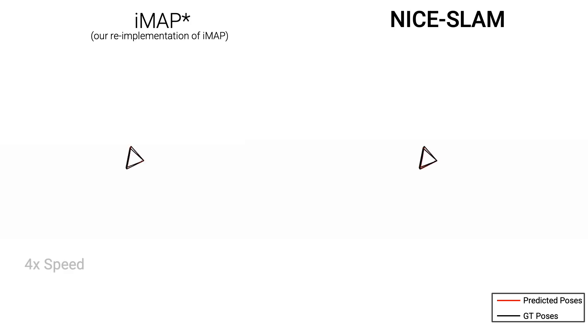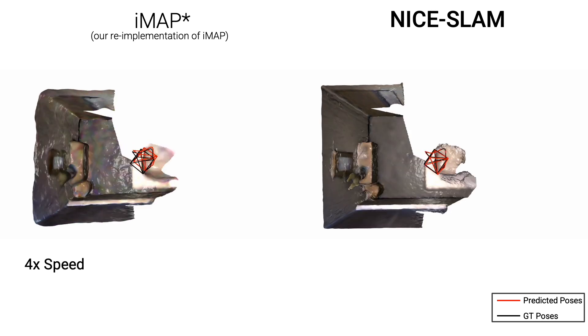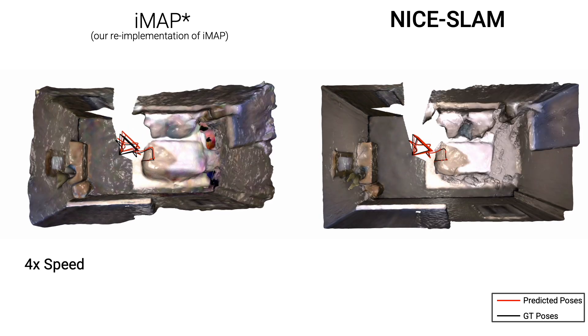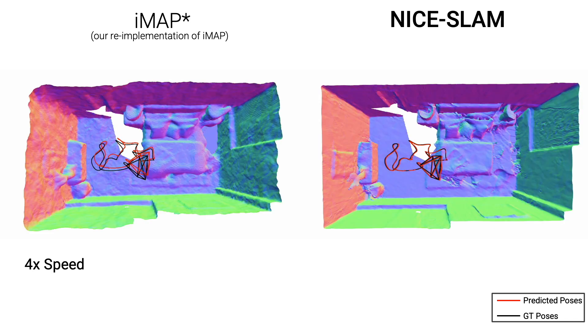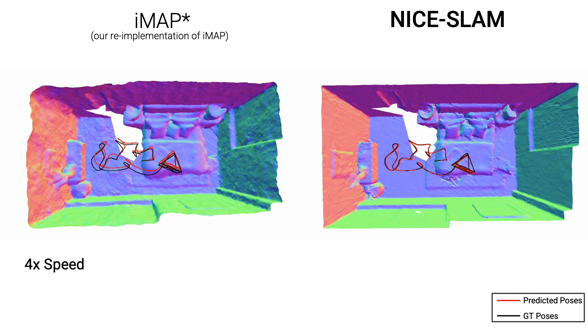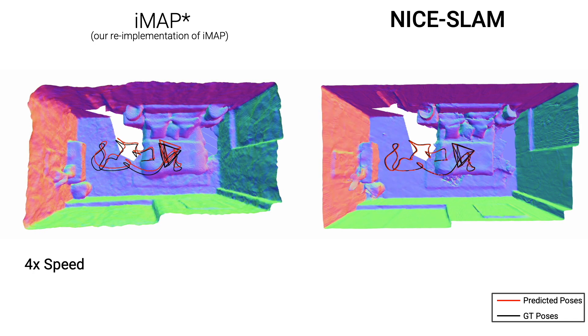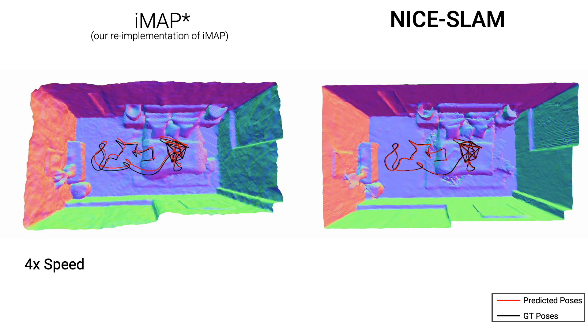Now, let's look at some nice results. First, we compare on the Replica dataset with our re-implementation of IMAP. Even on such a small indoor scene, Nice Slam produces sharper and cleaner geometry.